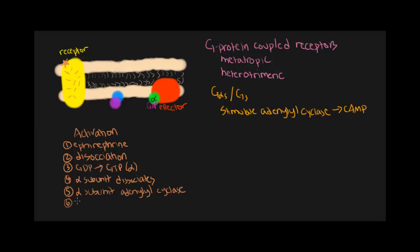Once bound, adenylyl cyclase is stimulated. And once this occurs, the next important step in our process can occur. Adenylyl cyclase converts ATP to cyclic AMP.